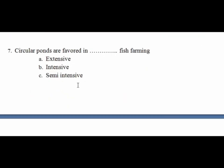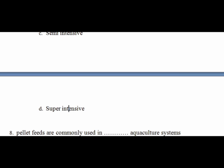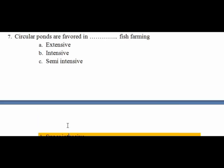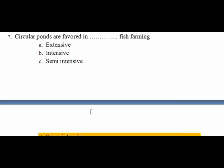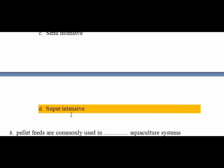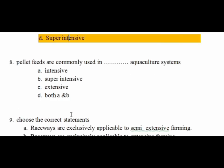Question 7: Circular ponds are favored in which farming system? Circular ponds offer efficient water circulation, self-cleaning properties, use of advanced technologies, and are suitable for high-density production. Therefore, circular ponds are associated with very intensive aquaculture — specifically super-intensive culture. To summarize pond shapes: semi-intensive uses rectangular ponds, intensive uses square ponds, and super-intensive uses circular ponds.